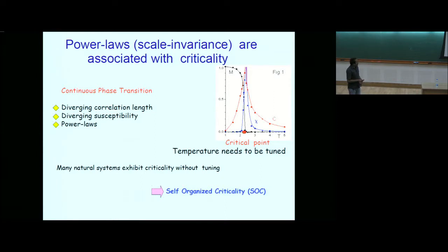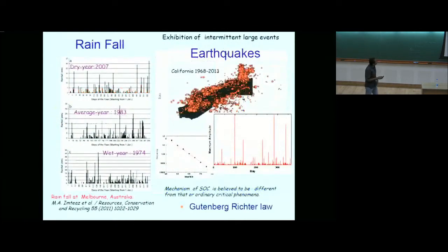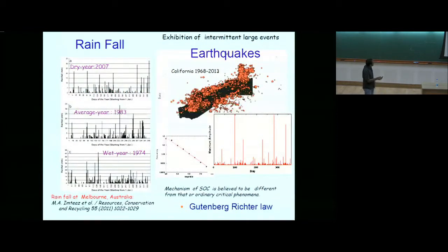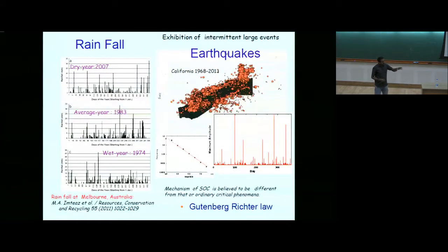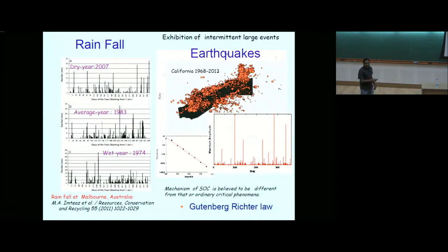On the other hand, many natural systems exhibit criticality without tuning, and when this happens we call it self-organized criticality. Examples include rainfall—different years show power laws—so large events are part of a power law, not an exponential distribution. Power law basically means sporadic large events, which you see during rainfall, earthquakes, and many other phenomena. If you plot them, you find power laws there.